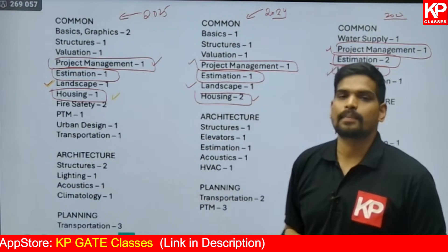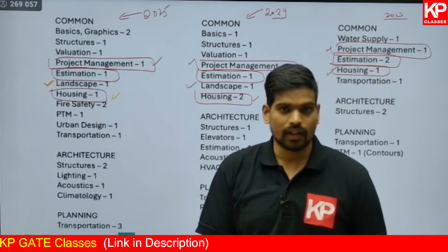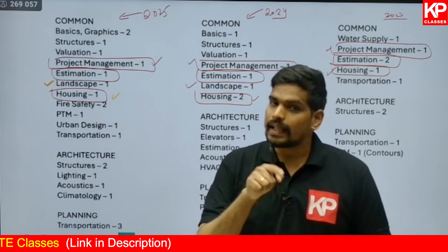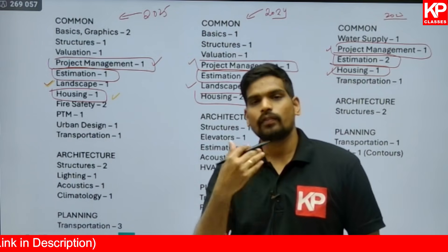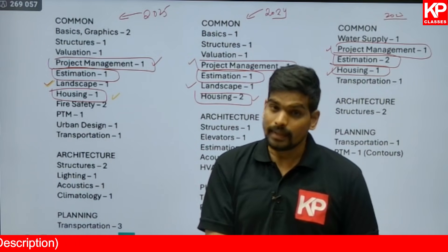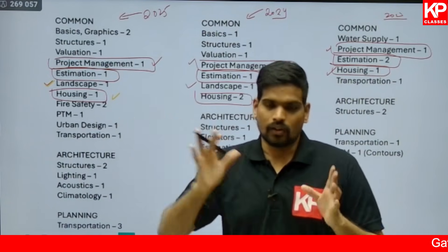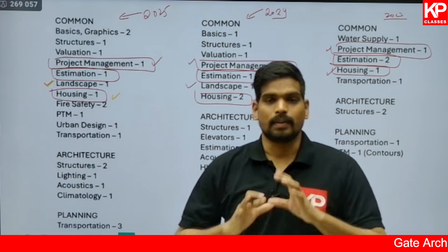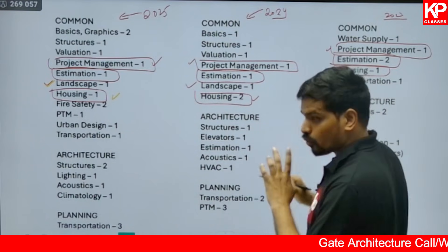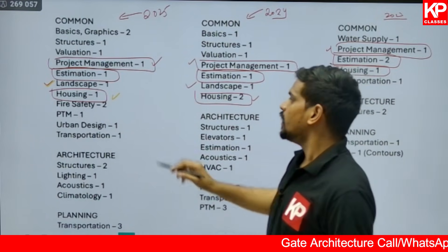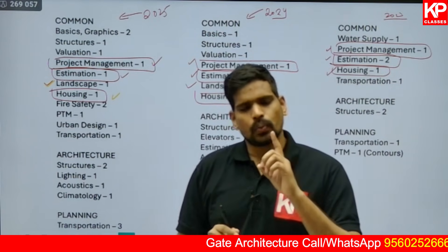For Project Management, the defined numerical concepts include: drawing a network diagram, identifying the critical path, and calculating project duration. You also need to know the four types of float and how to calculate them in a given network. Sometimes you may also get a numerical on PERT, not just CPM. Covering these areas will easily give you two more marks in the examination.